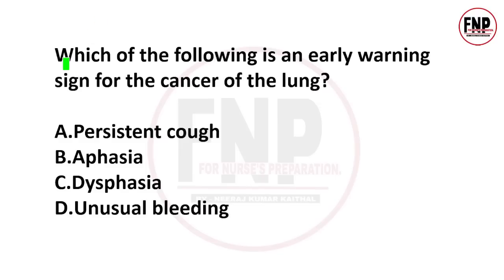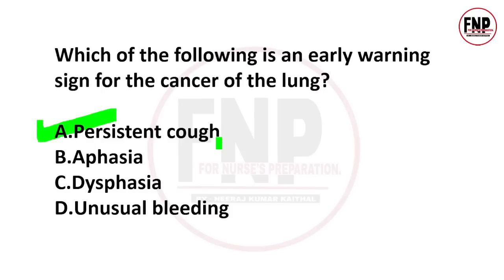Next question: Which of the following is an early warning sign for cancer of the lungs? Lung cancer होने पर early warning sign कौन सा देखने को मिलेगा? Options: Persistent cough, aphasia, dysphasia, unusual bleeding. The right answer is Option A — persistent coughing. Lung cancer होने पर patient को लंबे समय तक लगातार coughing होती है — यह early warning sign है. Aphasia का मतलब है बोल न पाना, dysphasia का मतलब है difficulty in speaking. Unusual bleeding is not an early warning sign of lung cancer.